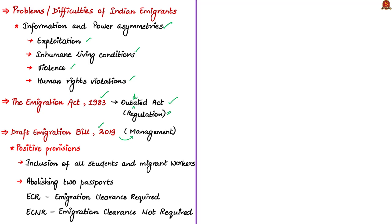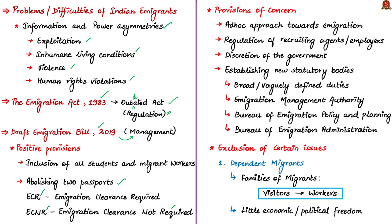Next is the abolishment of the two passports regime. Remember that one passport requires emigration clearance, called ECR, and the other does not require emigration clearance, called ECNR. Both these passports were issued based on a person's educational qualifications. The authors tell that abolishing the two passports regime will significantly improve the collection of migration flow data, as the current system excludes most migrants leaving India.